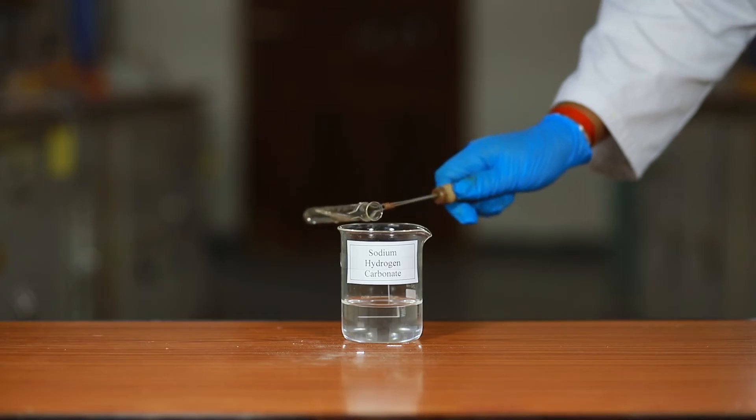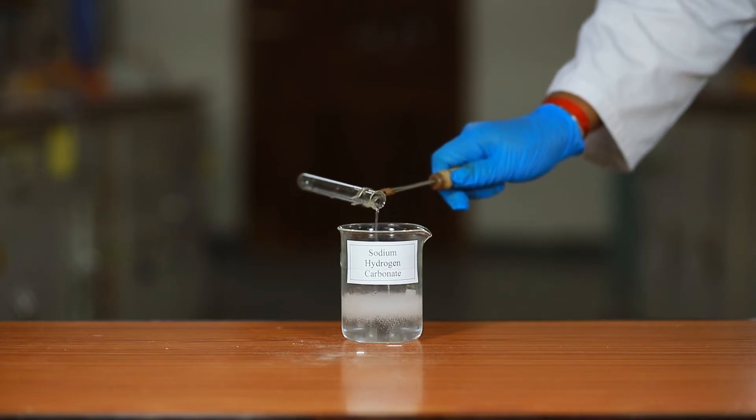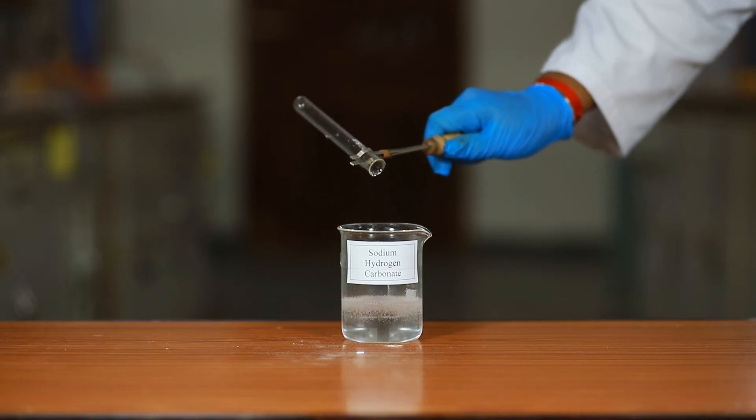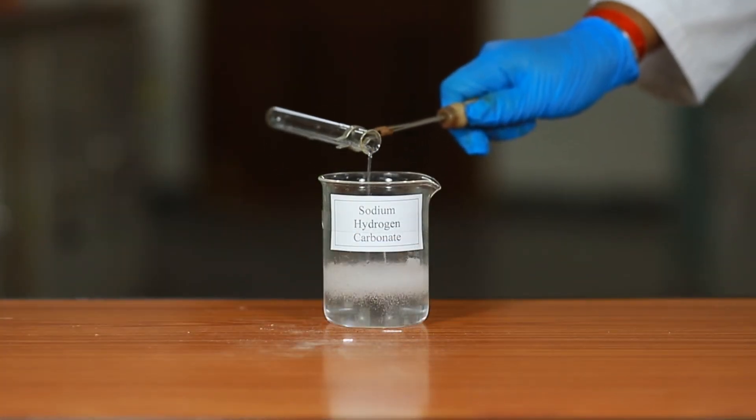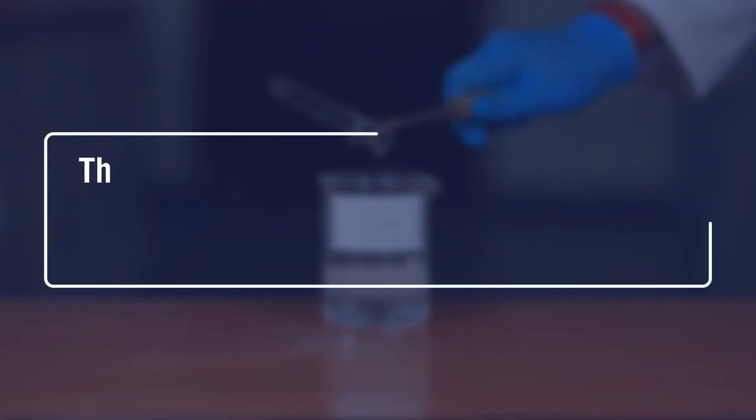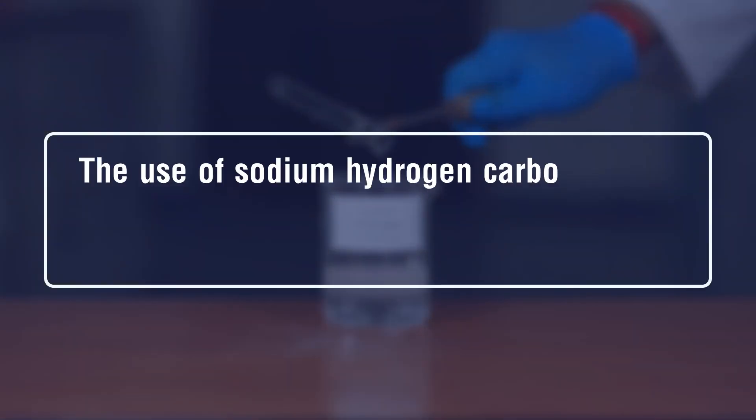Pour the reaction mixture into a new beaker containing aqueous sodium hydrogen carbonate solution. Effervescence with bubble formation is observed. The sodium hydrogen carbonate removes unreacted ethanoic acid from the mixture.